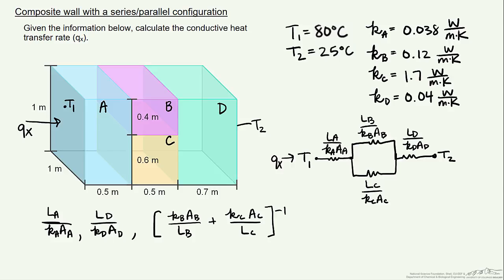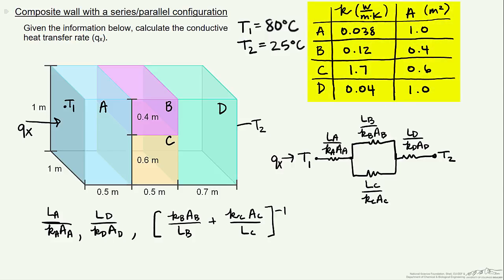So let's use the following values to calculate our heat transfer rate. Notice that the areas change for both B and C, because if you look up here, the height is different for each one of them. The sum obviously is going to be 1 meter, but one of them has a height of 0.4 meters, while the other has a height of 0.6 meters.